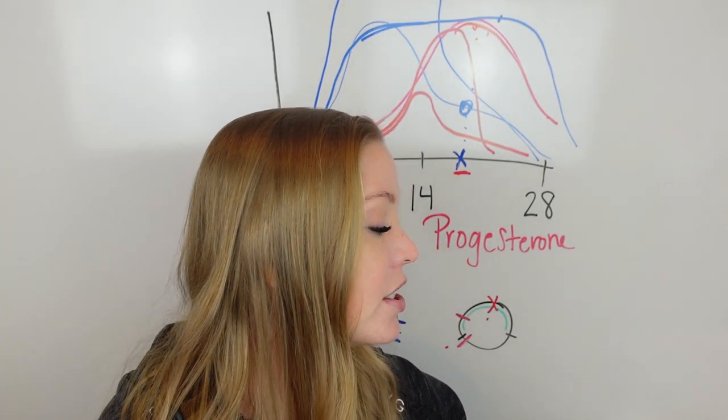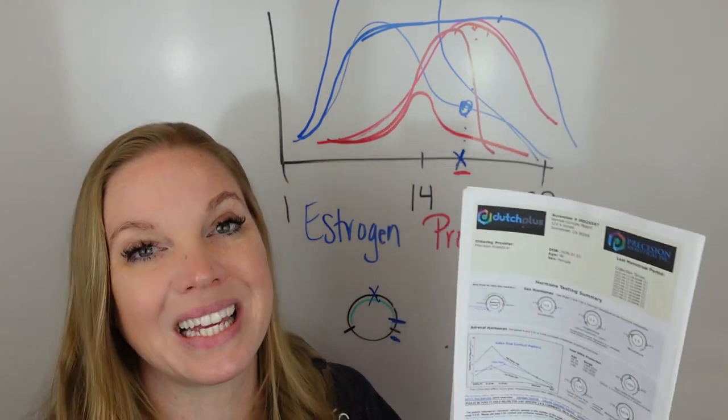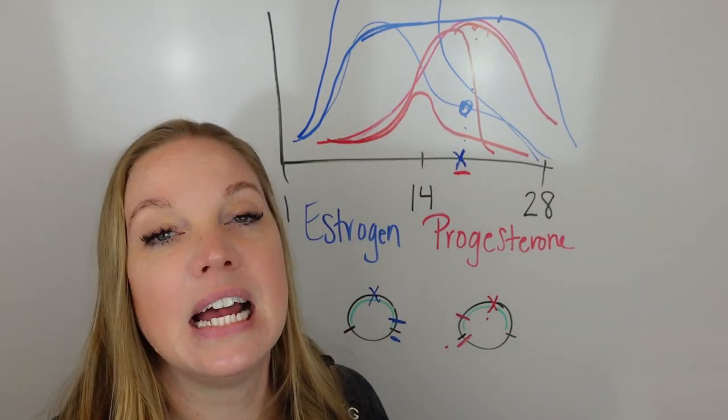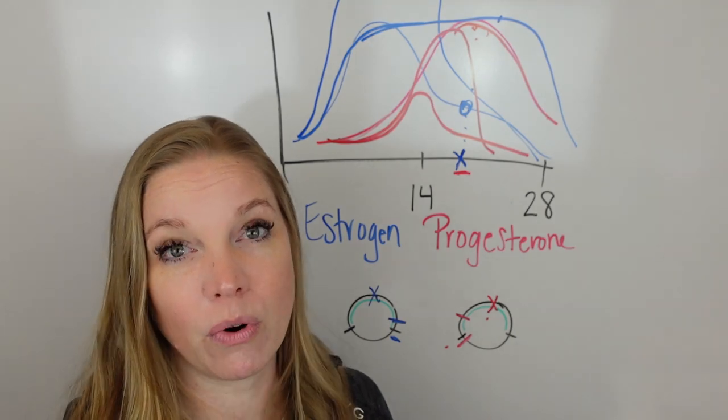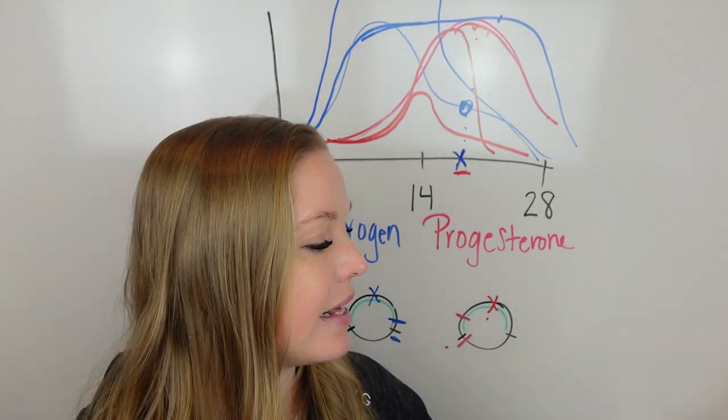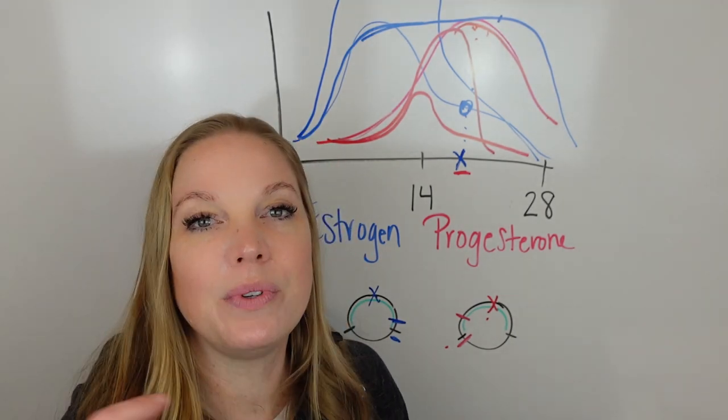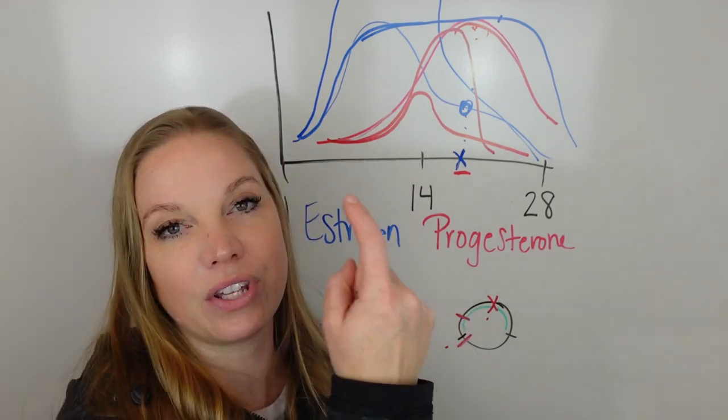That's why it's so important that we dive into this and look at this. But this is what we do with the Dutch test. We look at exactly what your system is doing, exactly how your body, how your liver is processing this, and then give you the right recommendations moving forward. Making sure that we're not missing anything, making sure that everything that you need to be addressed is addressed here so that your levels can improve.